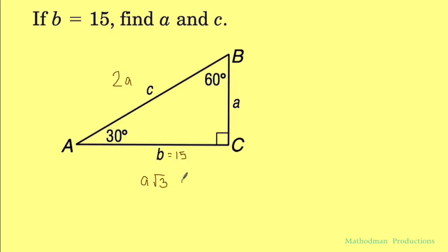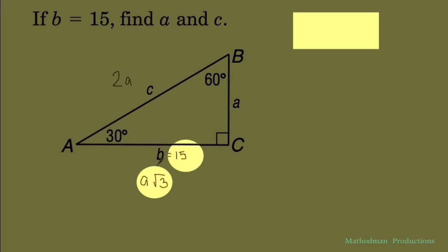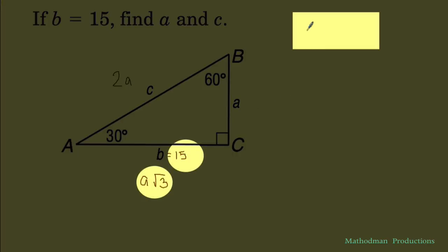If you look around you can set up an equation right here. We know that this is a, whatever a is times square root of 3, and we know that that's 15. So we can set up this equation right here: a times the square root of 3 equals 15.